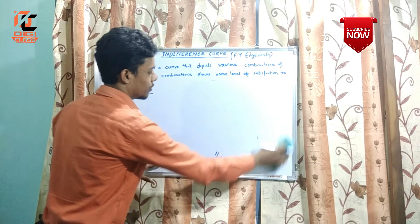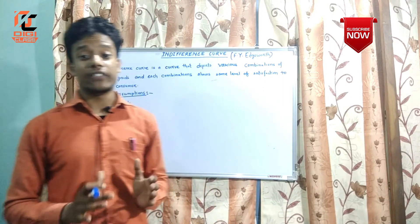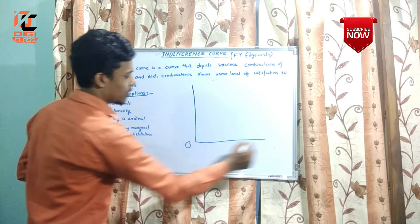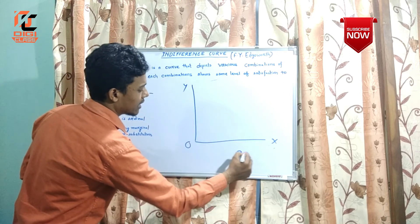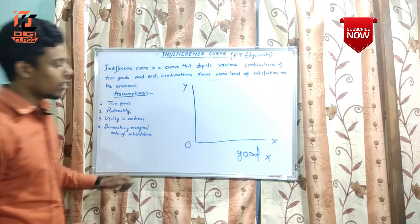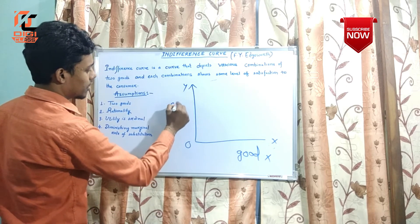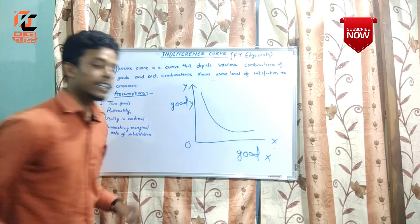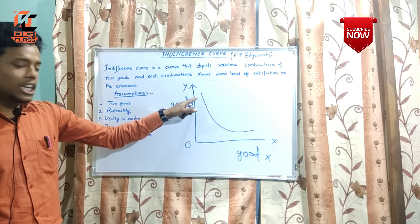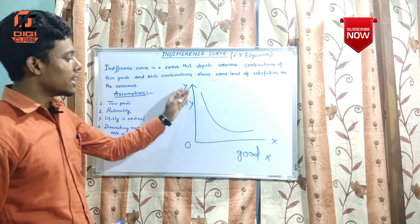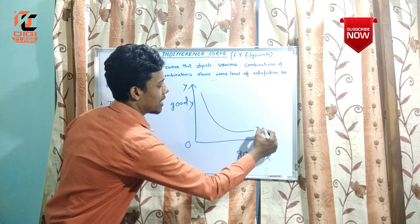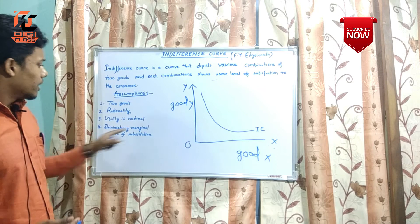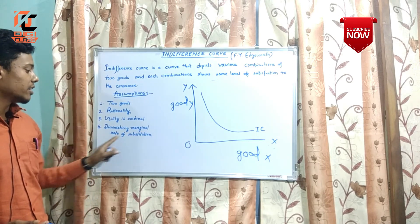Now we will draw the indifference curve to understand its shape. On the X-axis we take good X, and on the Y-axis we take good Y. The shape of the indifference curve is downward sloping from left to right, and it is generally shown as IC — indifference curve. It is downward sloping because of the diminishing marginal rate of substitution.